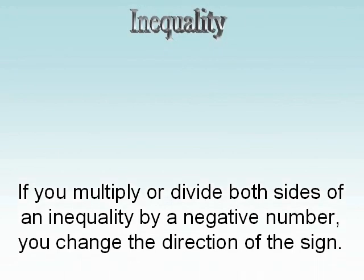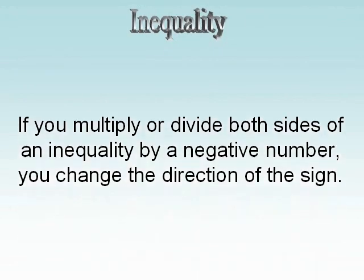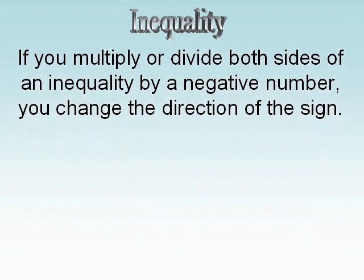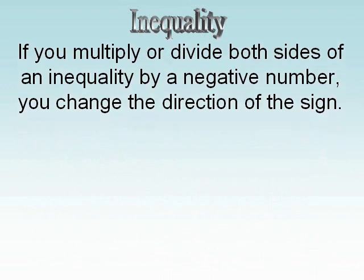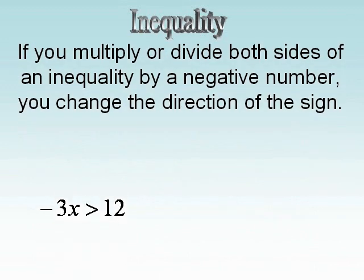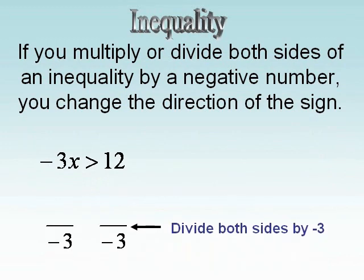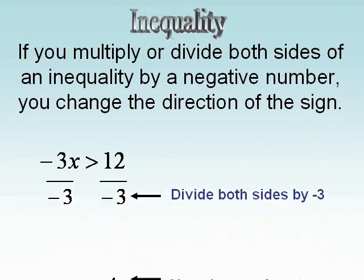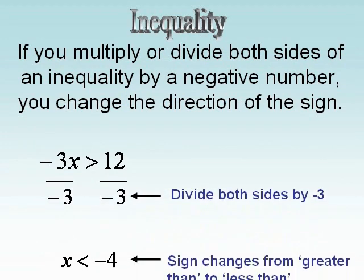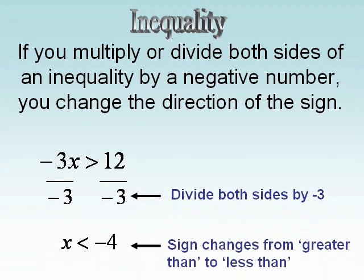If you multiply or divide both sides of an inequality by a negative number, you change the direction of the sign.